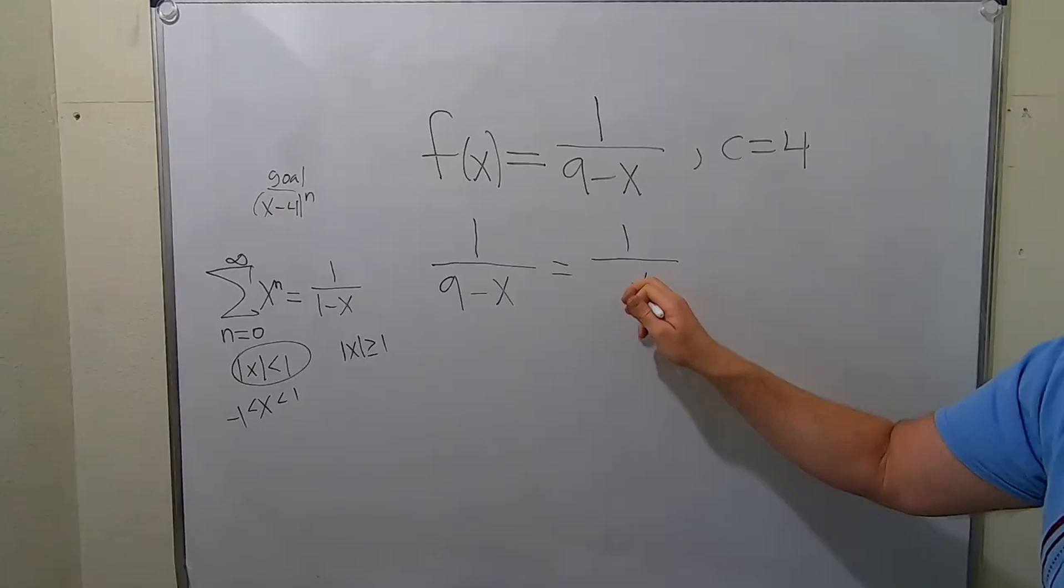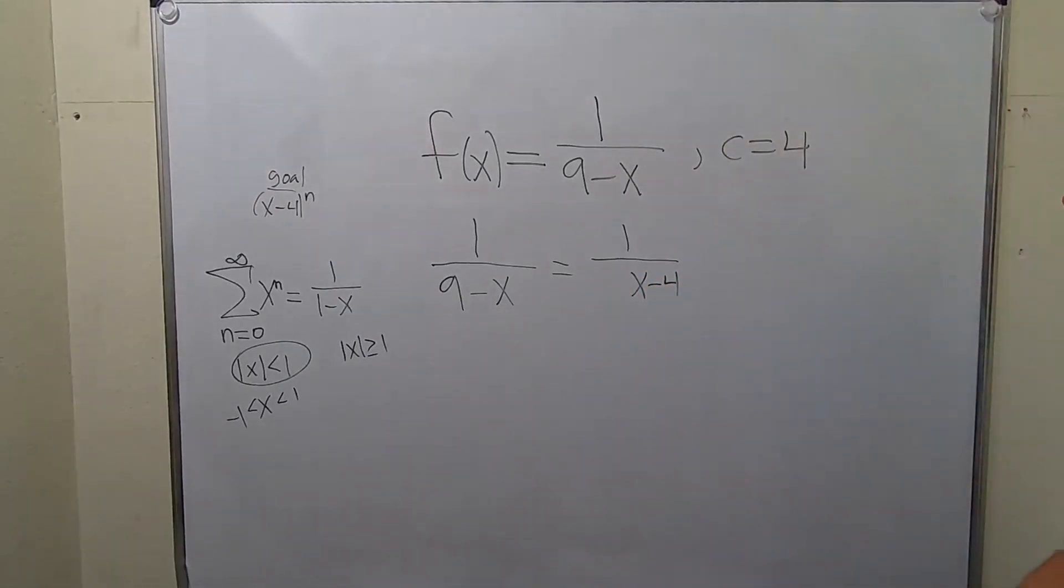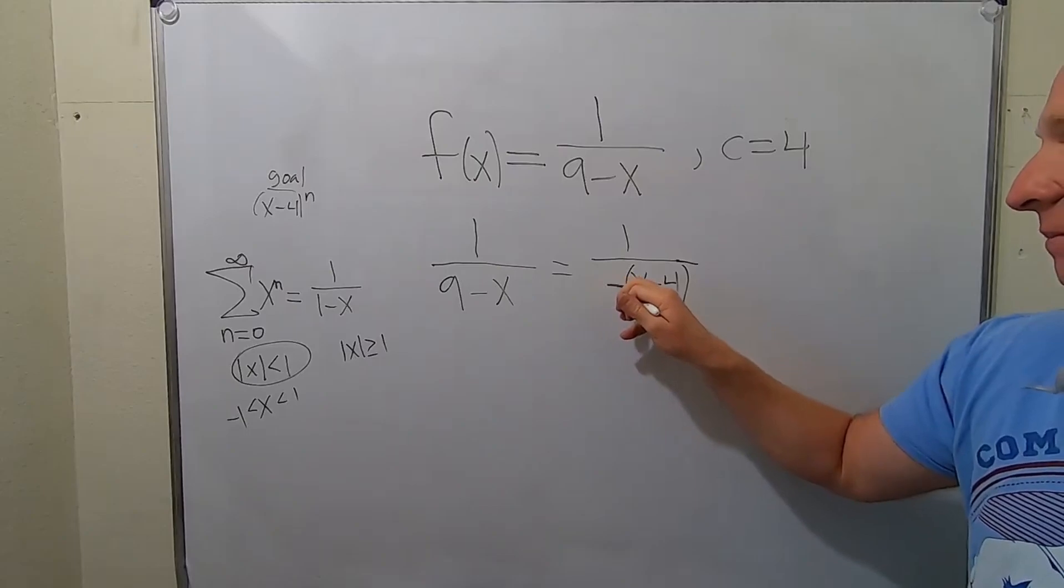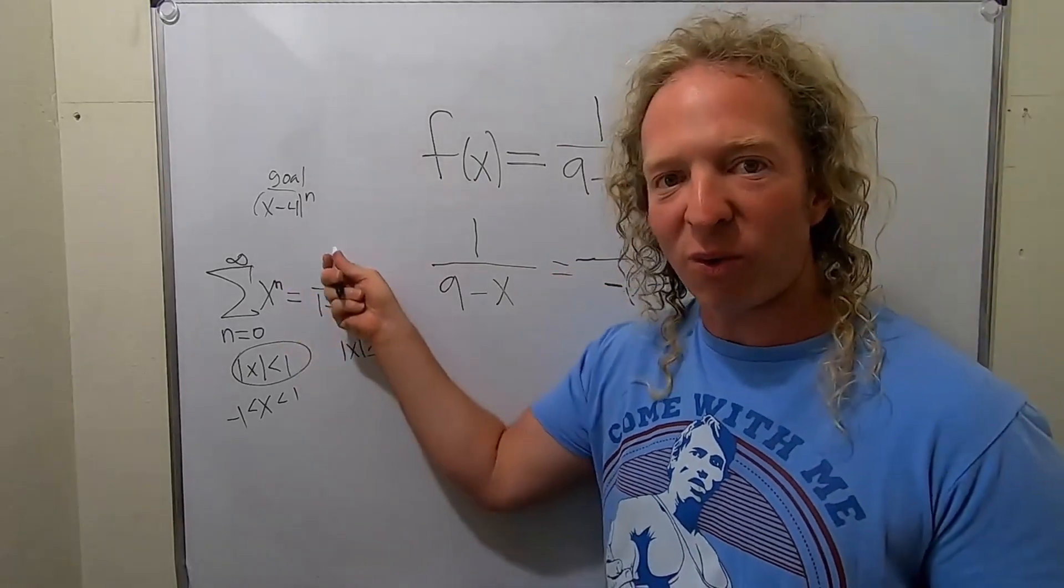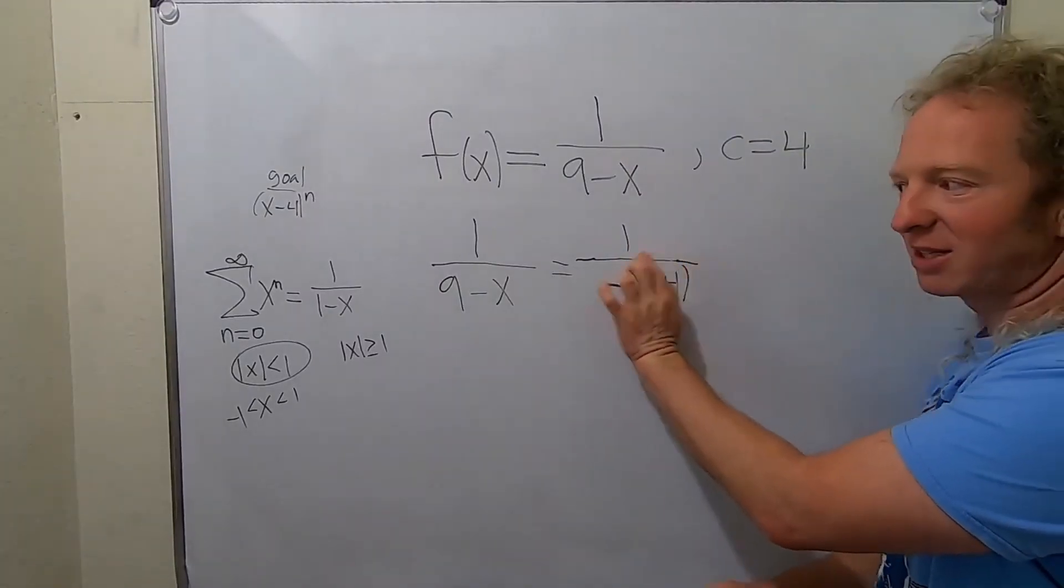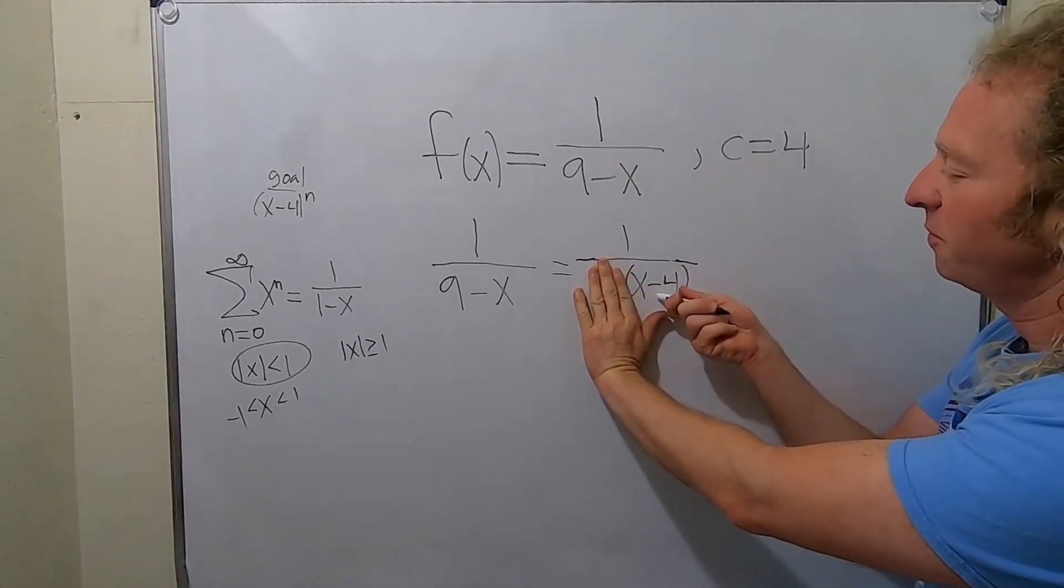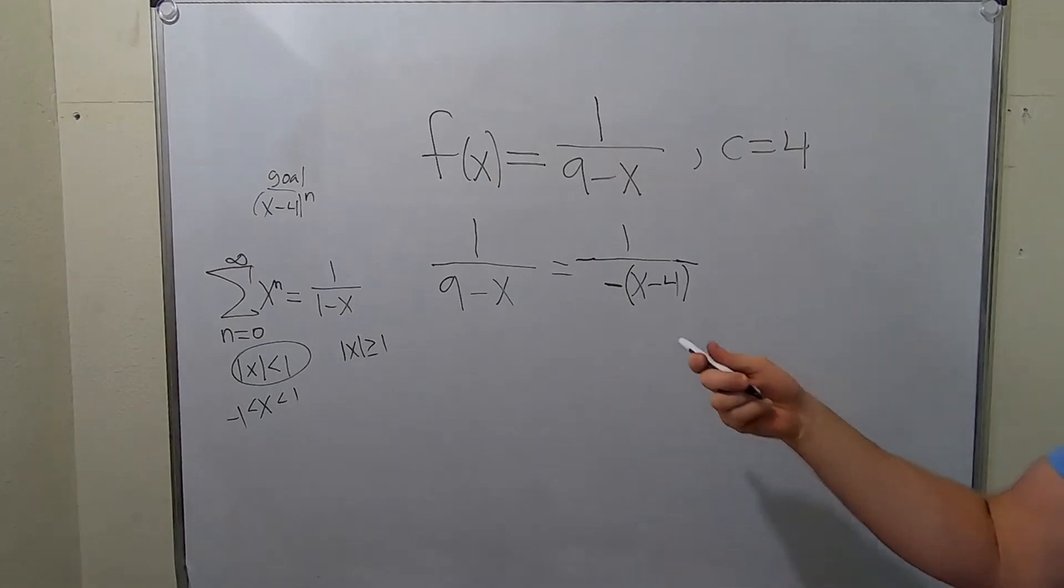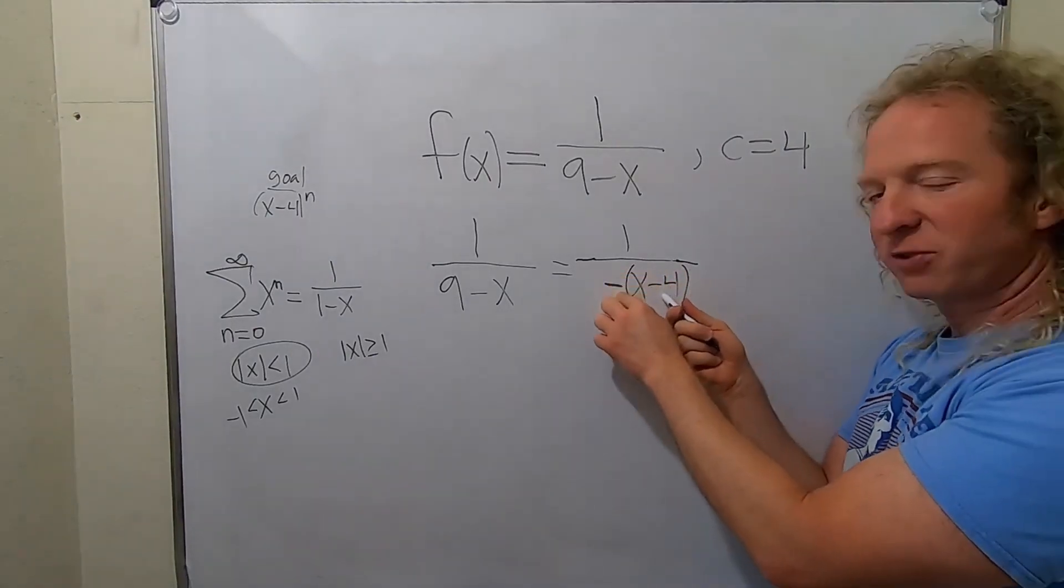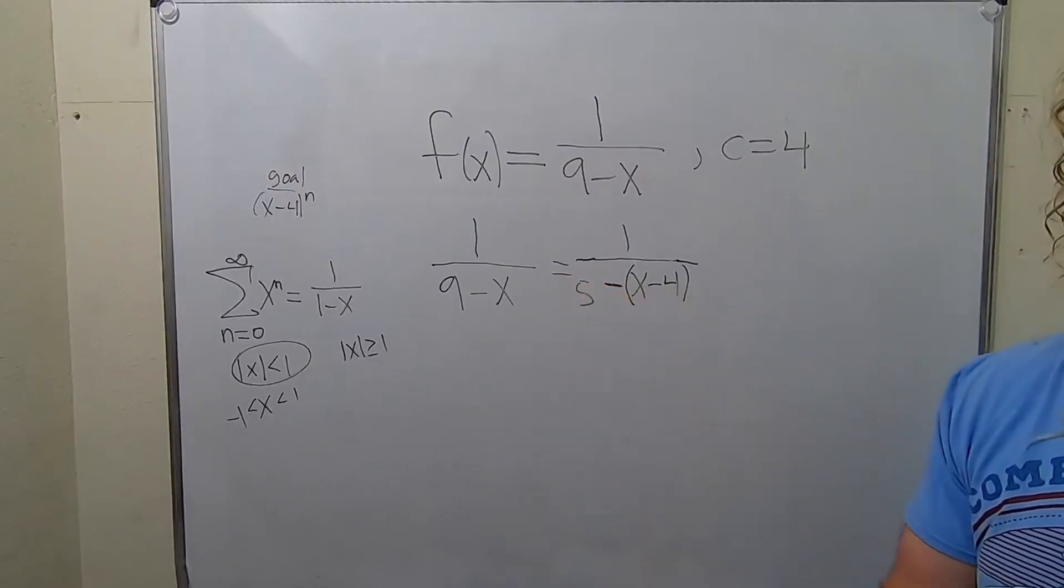That means we have to have an x minus 4 here. So what we do is we just put it there. Because we can do whatever we want as long as we make it right. All right, so that needs to be there. This also needs to be a minus sign. Because we're trying to use this formula, 1 over 1 minus x. So we've got the 1, we've got the minus. This is going to be our x. You see there's an x here. This is going to be our x. So you write this down because the center is 4. You put the negative there. You say, okay, this is negative x plus 4. How do you get from plus 4 to 9? You add 5. Beautiful stuff.